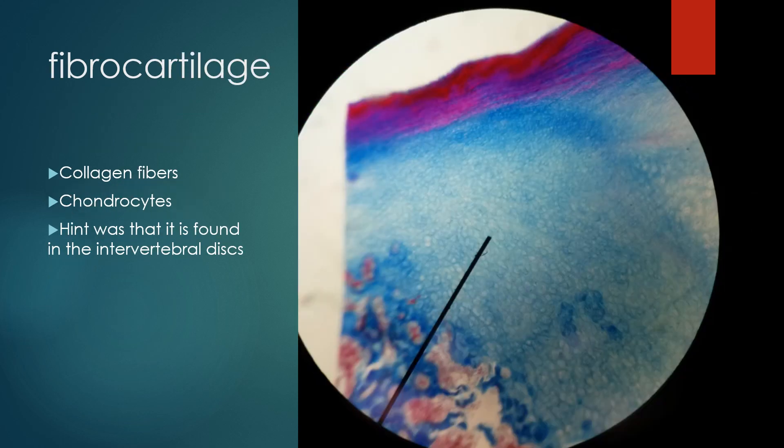Number 10 was fibrocartilage. The fibers that you see are collagen fibers and the cells are going to be chondrocytes. The cell type is common to all types of cartilage. They have these irregular shapes, and sometimes they really look like little coffee beans, I think. The hint associated with this microscope station was that this is the type of cartilage that is found in the intervertebral discs.